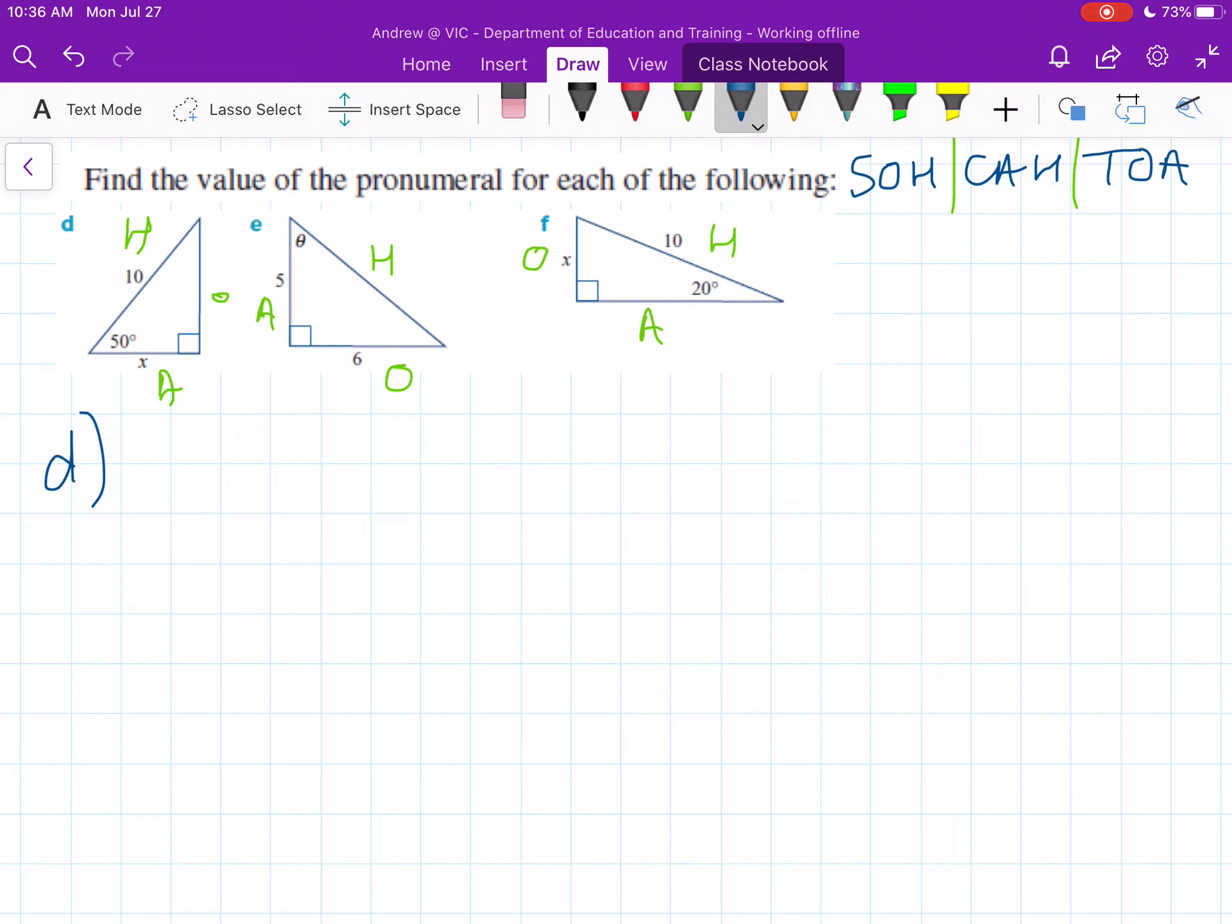For this we need to use cosine. So we set up our trigonometric equation: the cosine of 50 is equal to—and just remember this is adjacent over hypotenuse—so it will be x over 10.